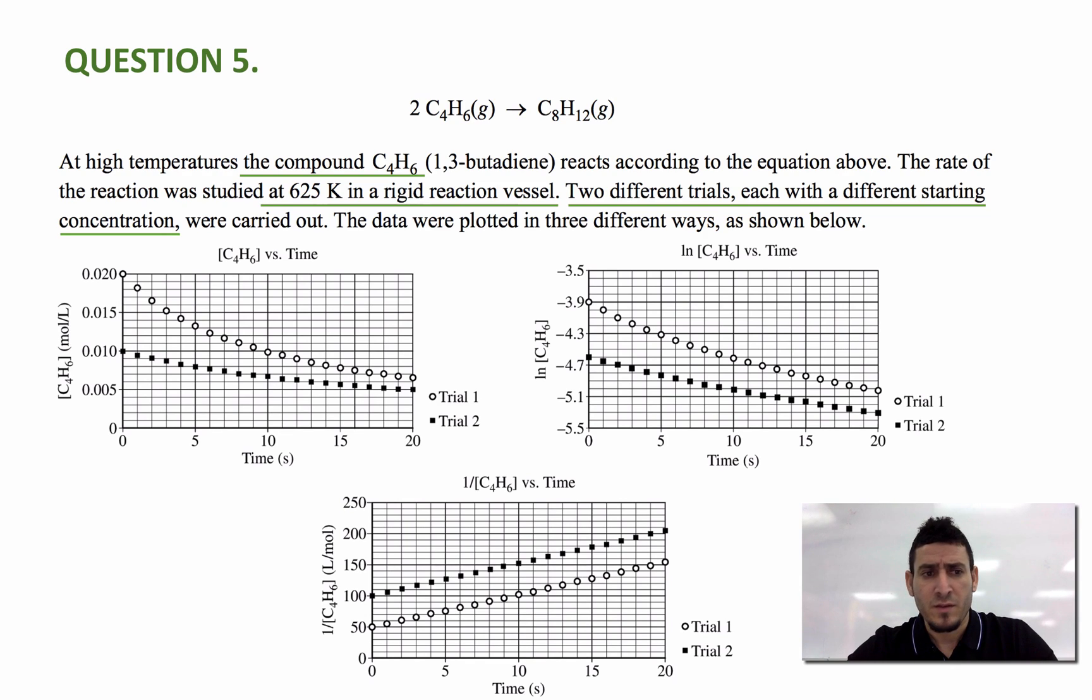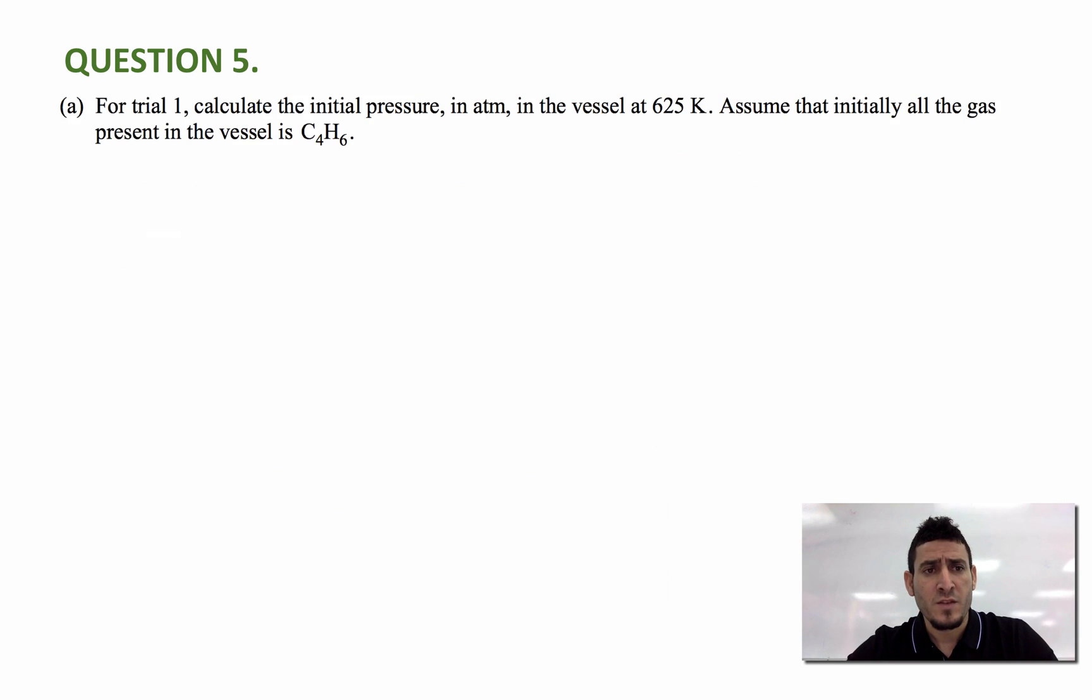So I have one graph for concentration versus time, another one for natural log of concentration versus time, and the third one is one over concentration versus time. The first question is for trial one, calculate the initial pressure in atmosphere in the vessel at 625 Kelvin.